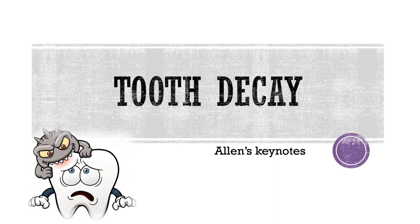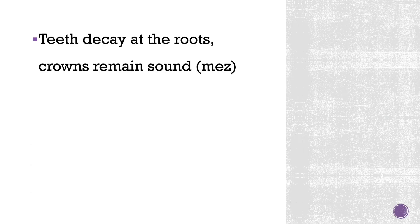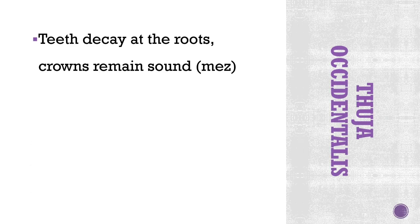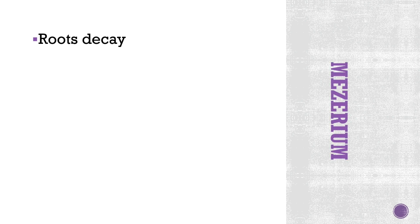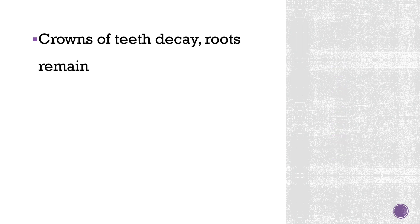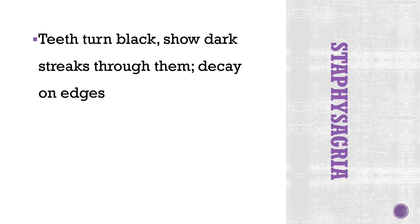Next: tooth decay. First: teeth decay at the roots, crown remains sound — this is given in Thuja. Teeth decay at the roots is also seen in Mezereum. So Mezereum and Thuja are for teeth decay at the roots. In Mercurius, the crowns of teeth decay while the roots remain sound.